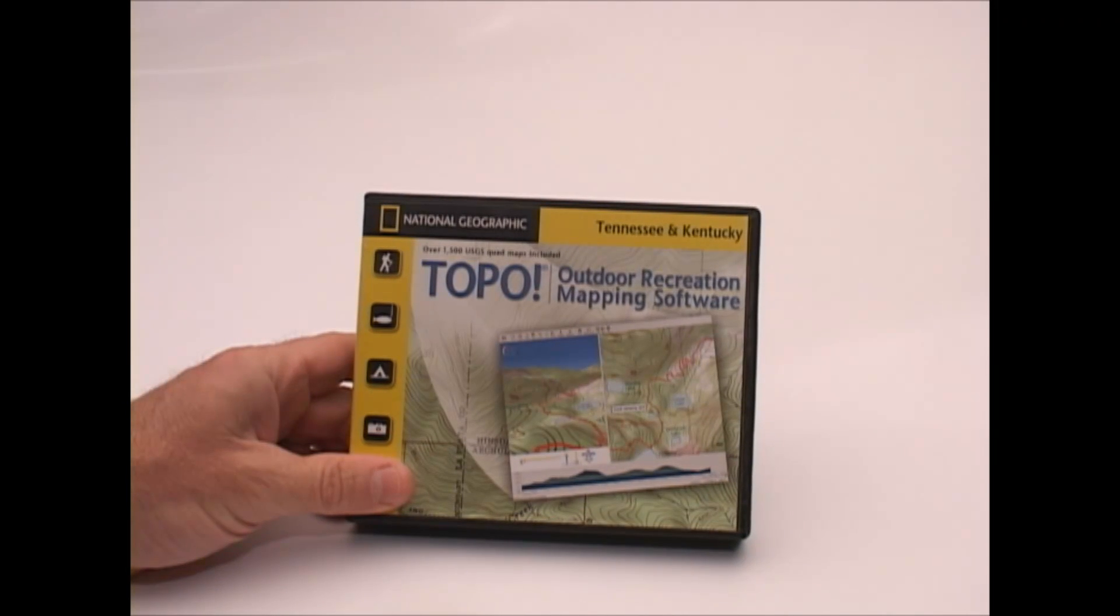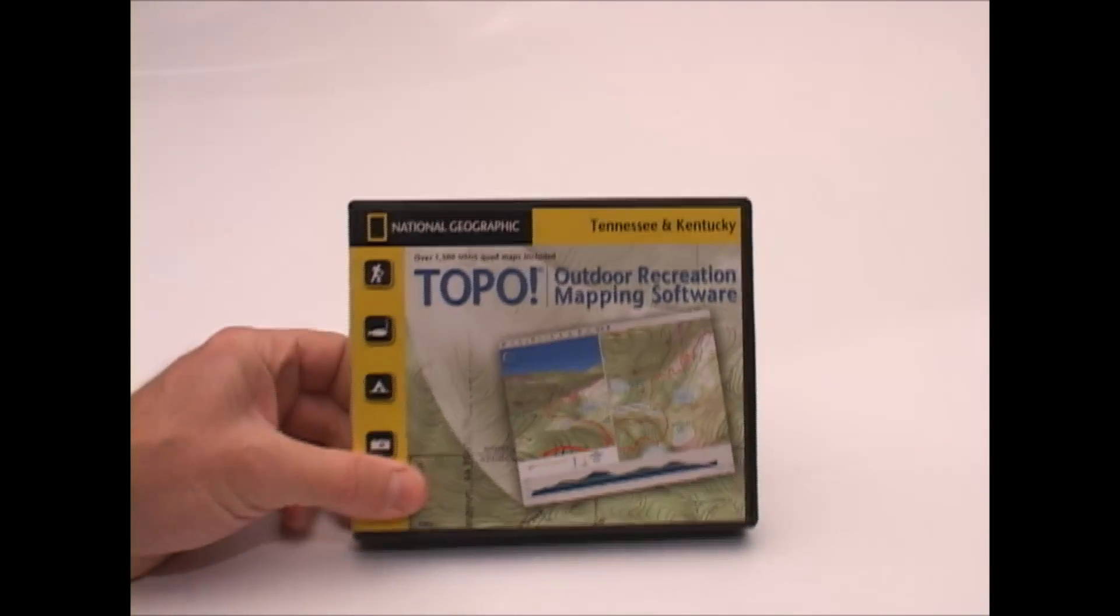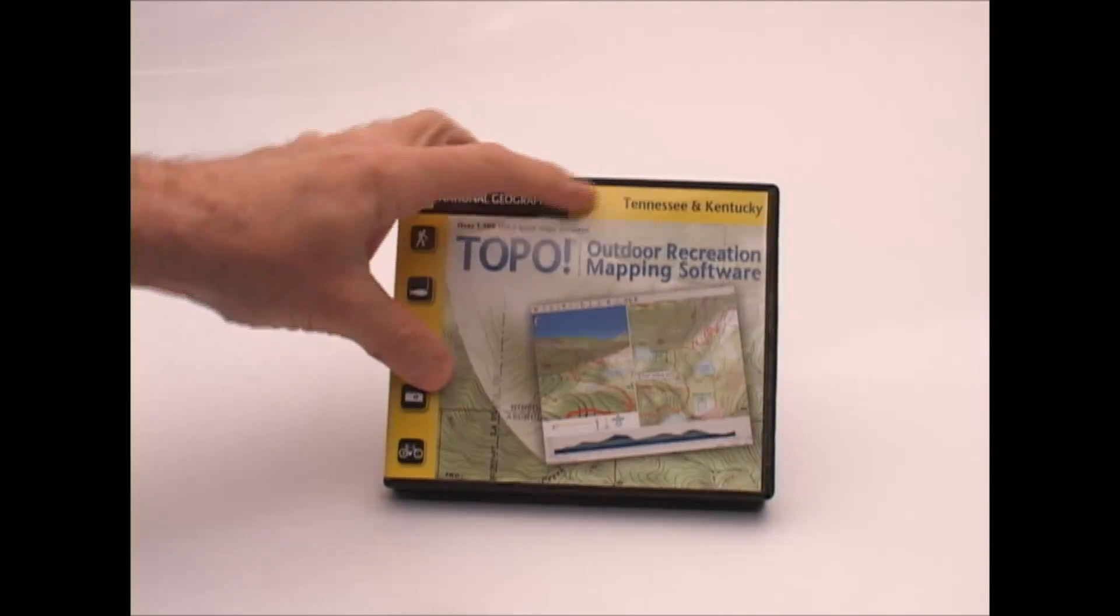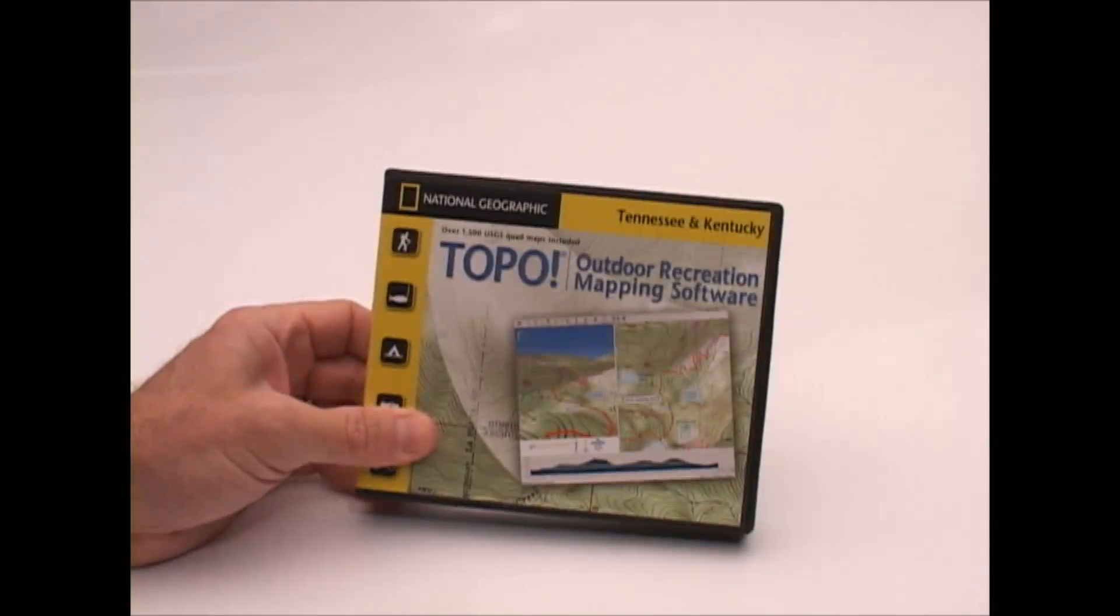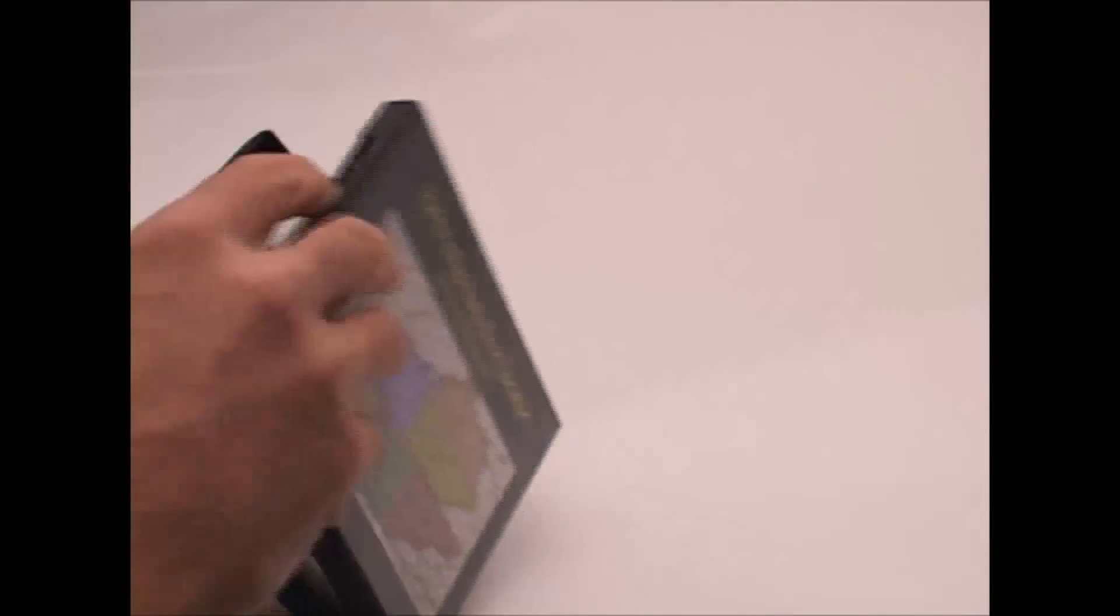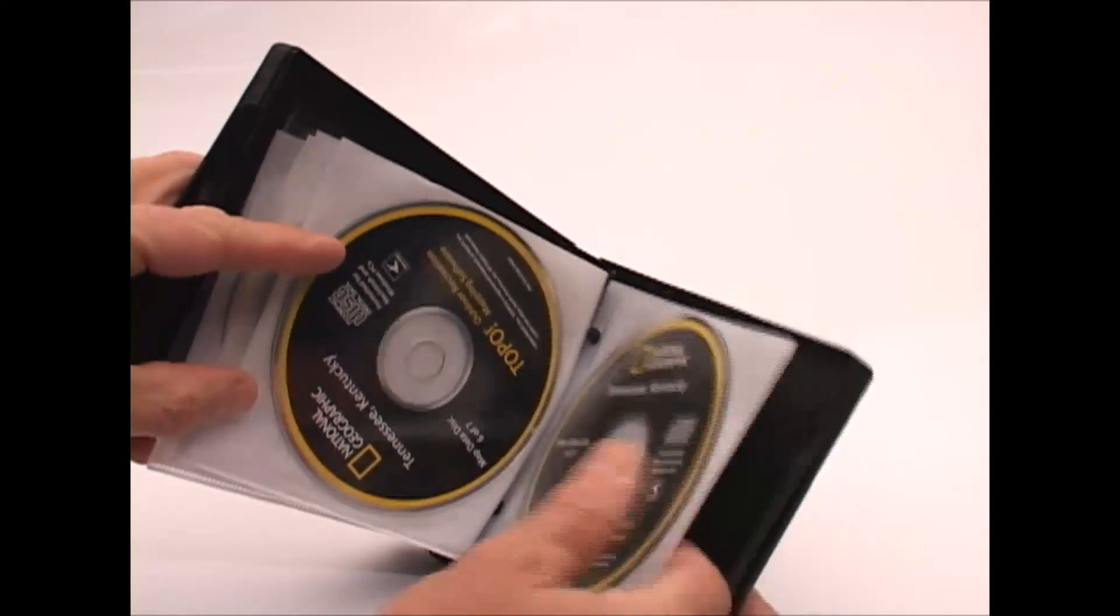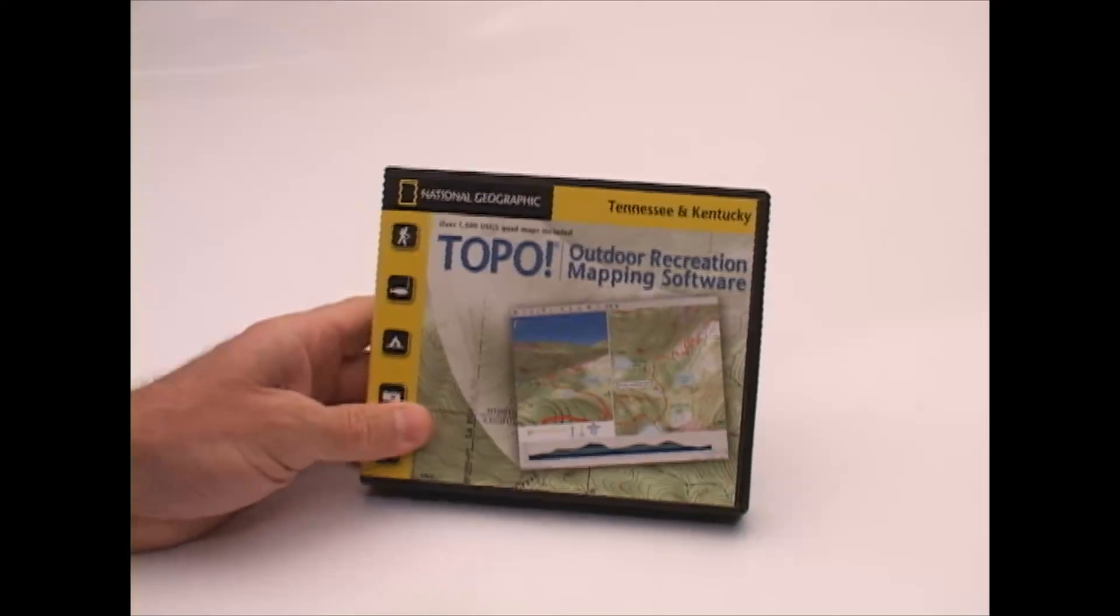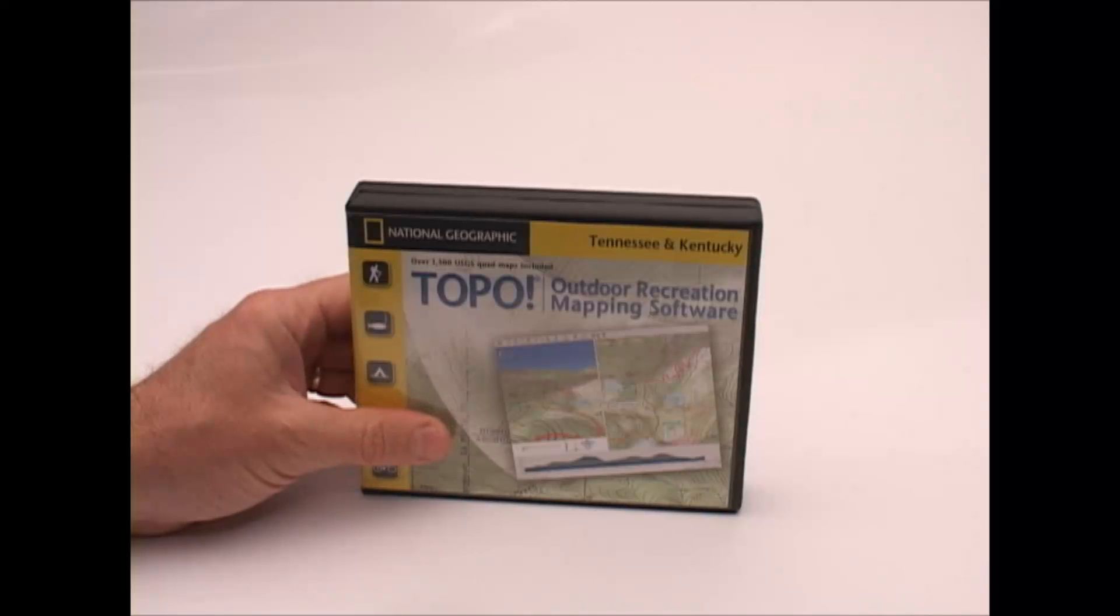This is the National Geographic Topo State Series of topographic maps. There are 28 different versions of this depending on the state that you live in. I live in Tennessee and for Tennessee, they've combined Tennessee and Kentucky together into one package. It has, I think it's seven CD-ROMs for all the data required. The maps come from scanned U.S. Geological Service seven and a half minute topo maps.